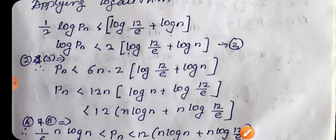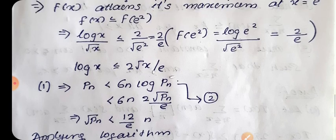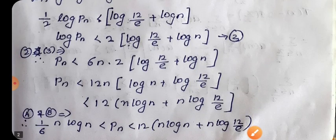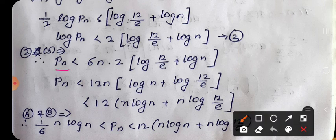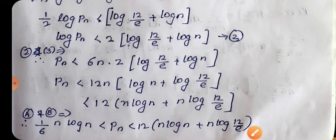Combining the two results: pn < 6n·log(pn) and log(pn) < 2·(log(n) + log(12/e)), we substitute to get pn < 6n · 2·(log(n) + log(12/e)) = 12n·log(n) + 12n·log(12/e). Arranging the function gives the final upper bound: pn < 12n·log(n) + n·log(12/e), completing the proof of Theorem 4.7.